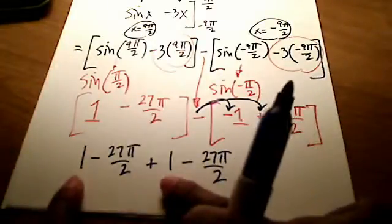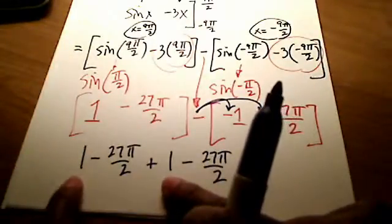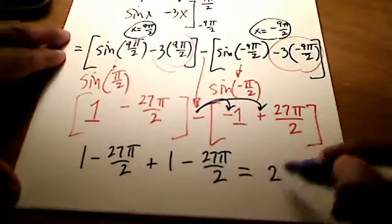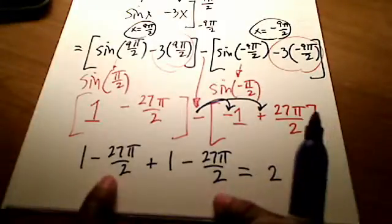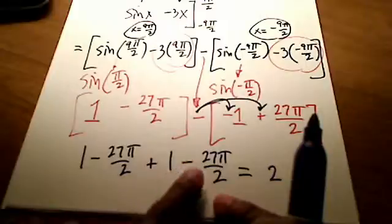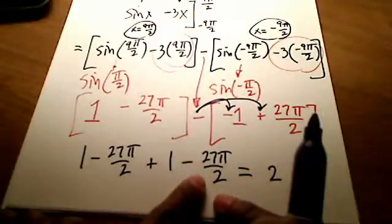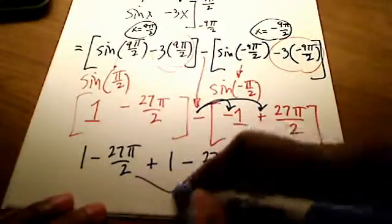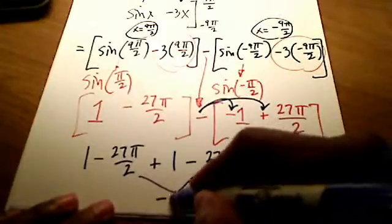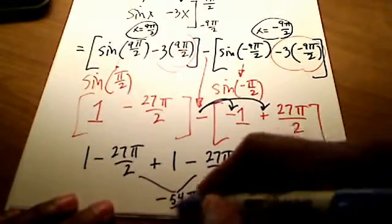Well, I hope you see that these two are similar, right? 1 plus 1 is obviously 2. It's easy enough. And if I've got negative 27π over 2 added to another negative 27π over 2, I really have, from these two guys, I really have a negative 54π over 2.